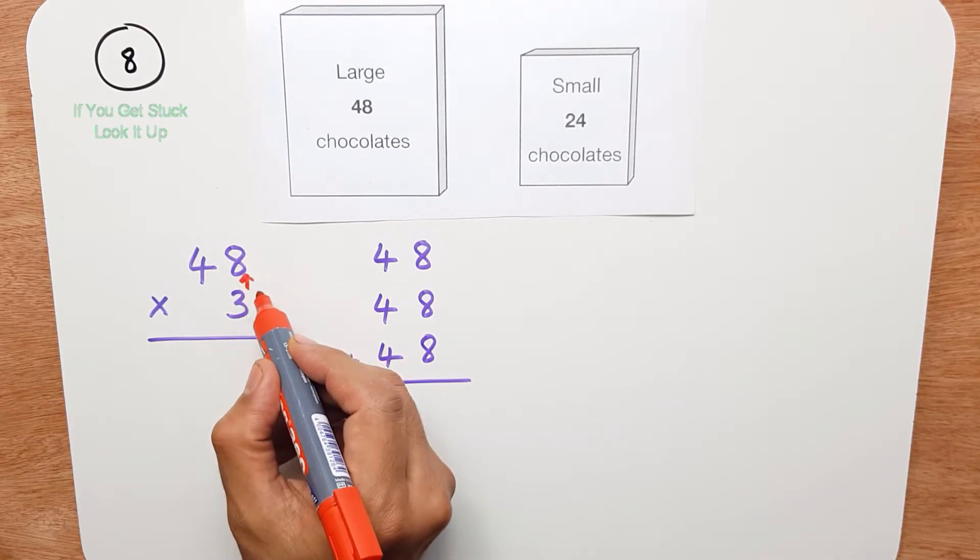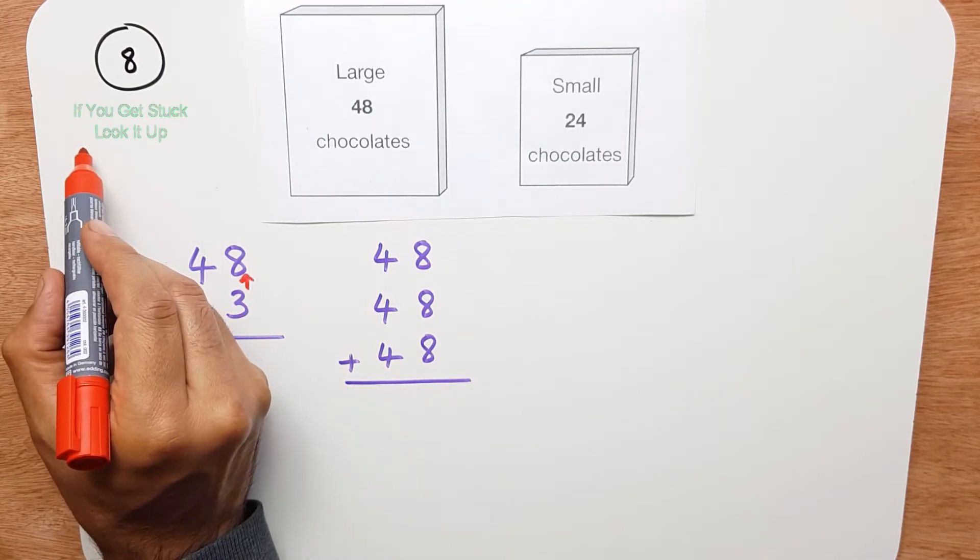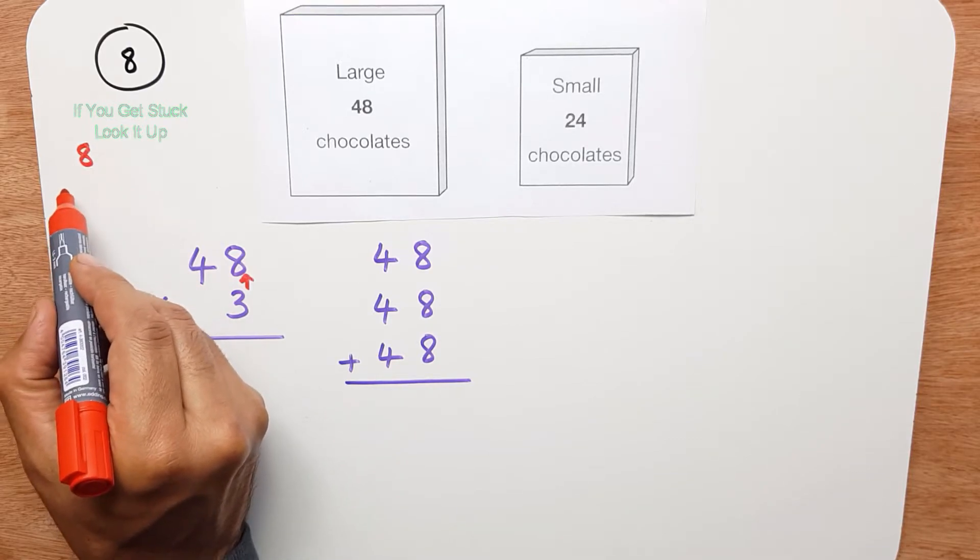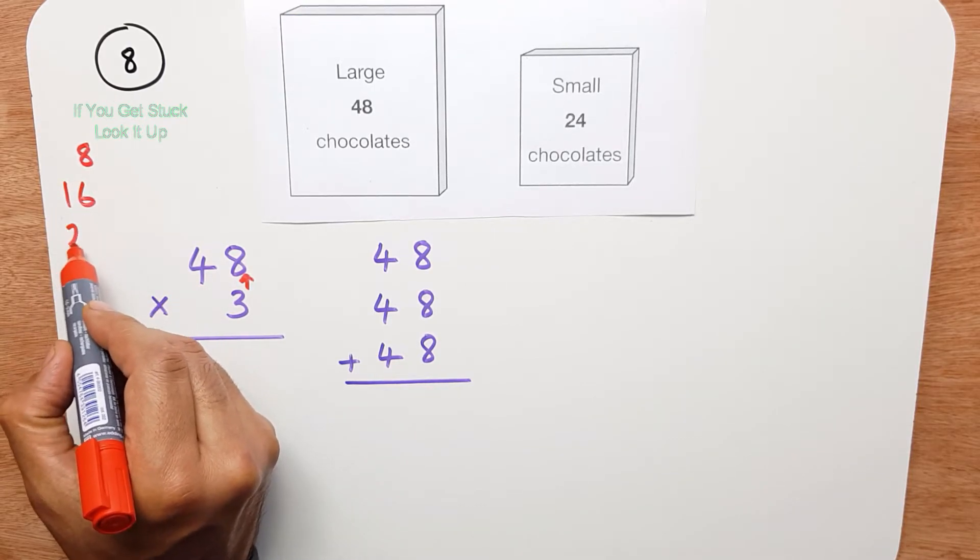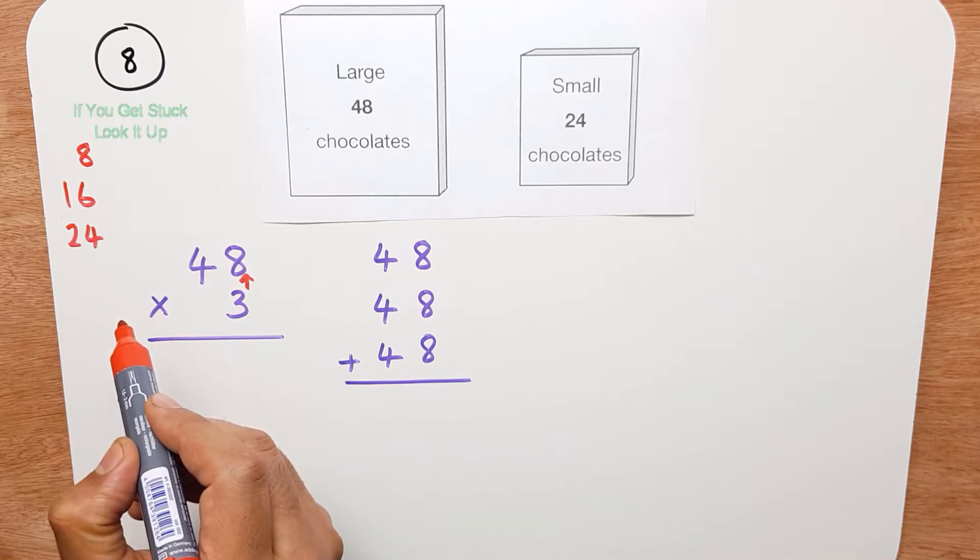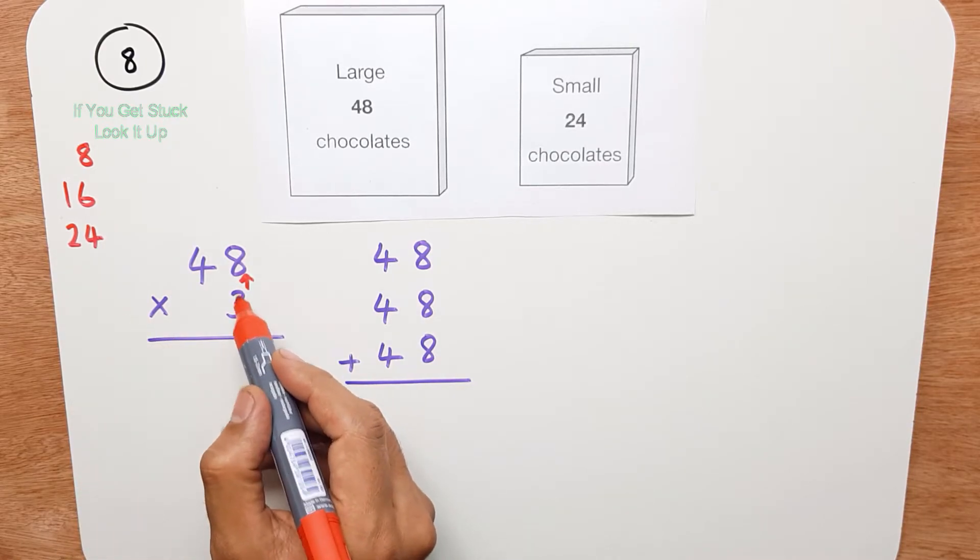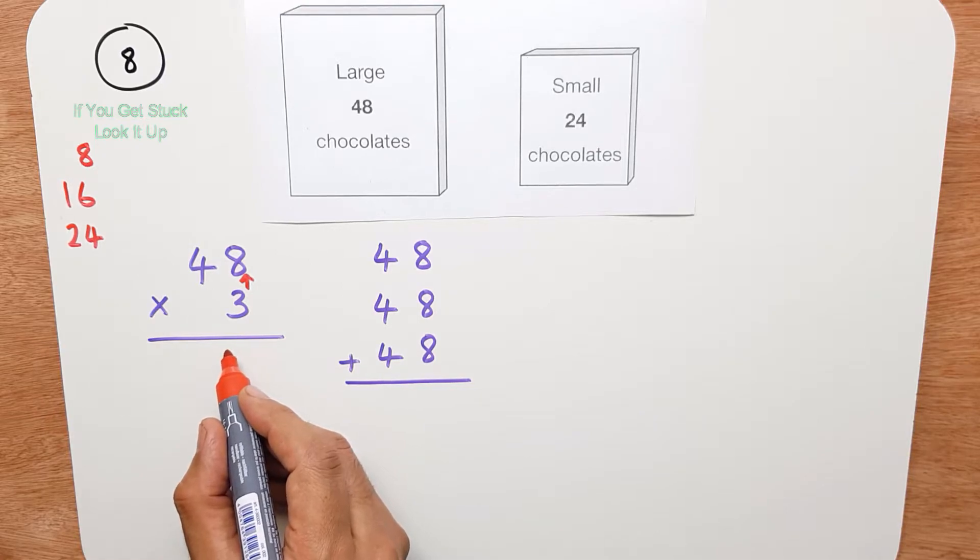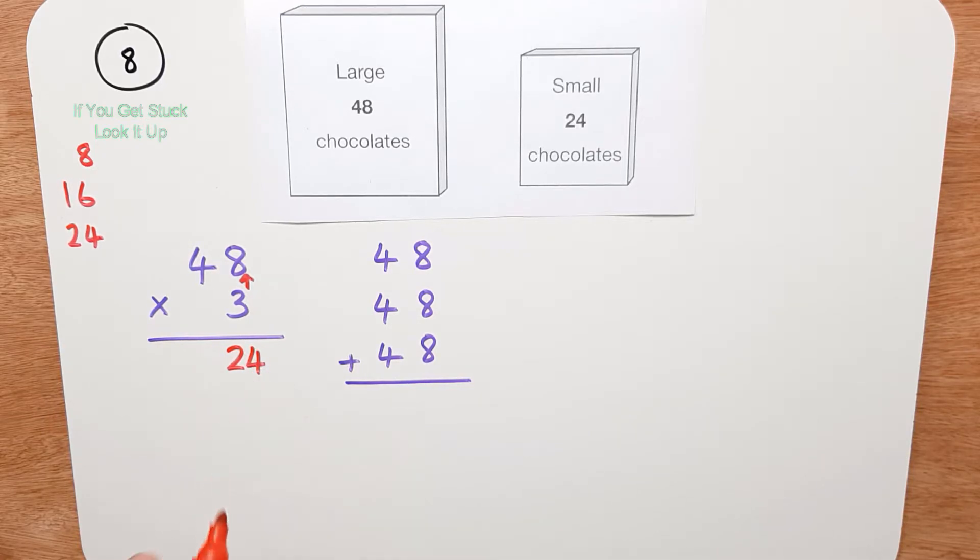3 times 8, I'll do my 8 times table, so it's 8, 16, 24. So 3 times 8 is 24. So I can't write 24 like this in one column, that would be wrong. I need to carry the 2 over to the next column.